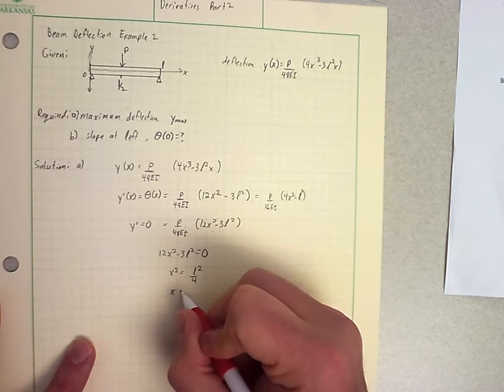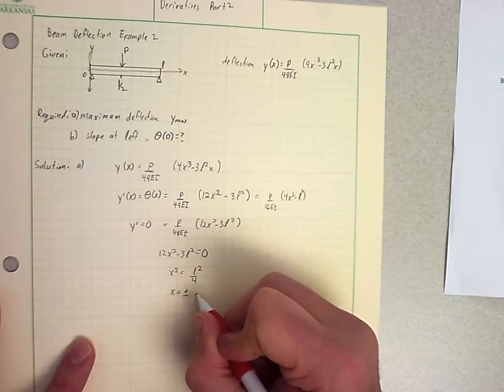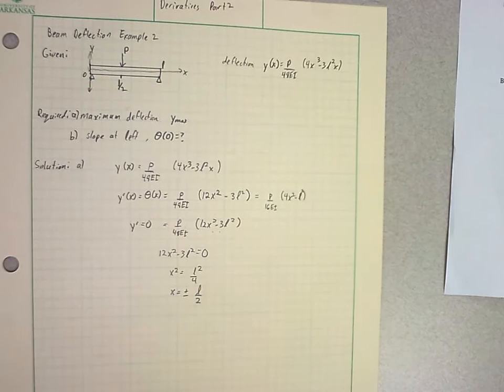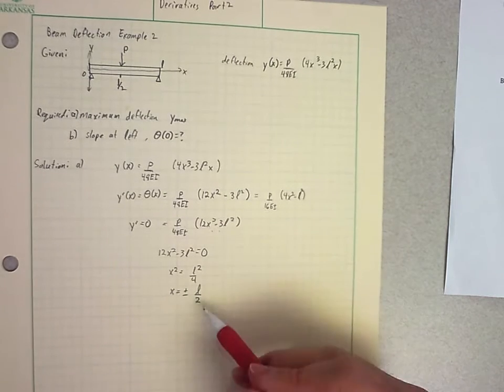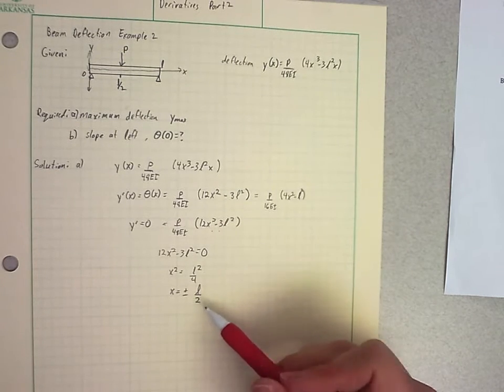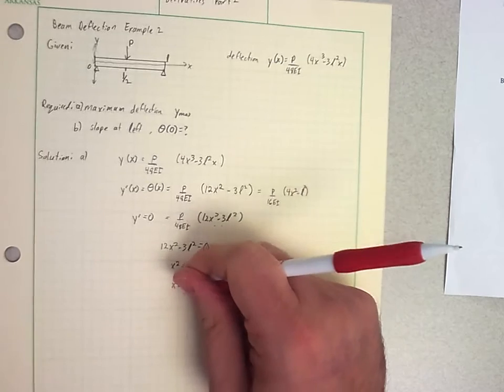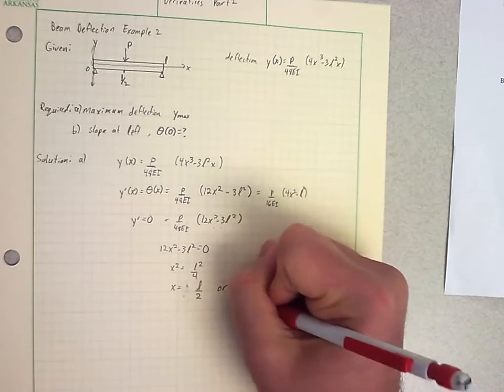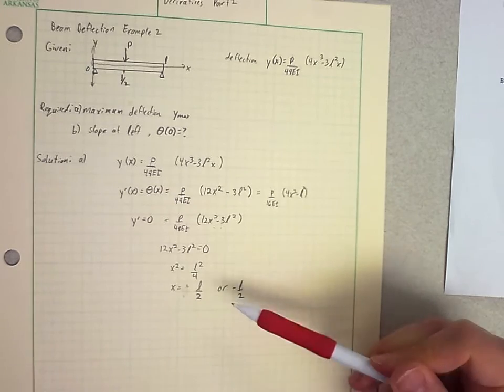So X is plus or minus L over 2, if I take the square root of both sides. That's really two expressions. Maybe I should write them out. So X is L over 2 or negative L over 2. Negative L over 2, where's that on my beam?